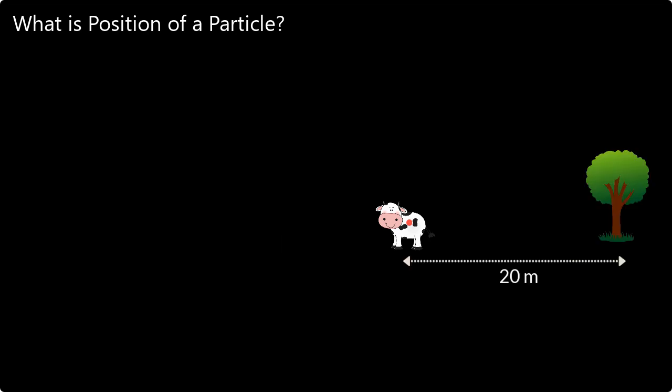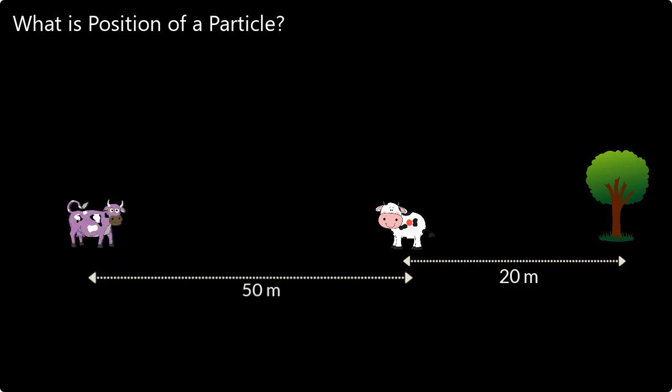Let us now try to understand what is meant by position of a particle. Say a cow is grazing in a field and we put a point at the center of the cow's belly to show that we are treating the cow as a point object and all measurements will be done relative to this point. Then someone can say the cow is standing 20 meters away from this tree, or another person could say the cow is 50 meters away from this other purple cow. Different people are describing the position of the cow relative to different objects in the field, and this lack of clarity is not good when studying physics.